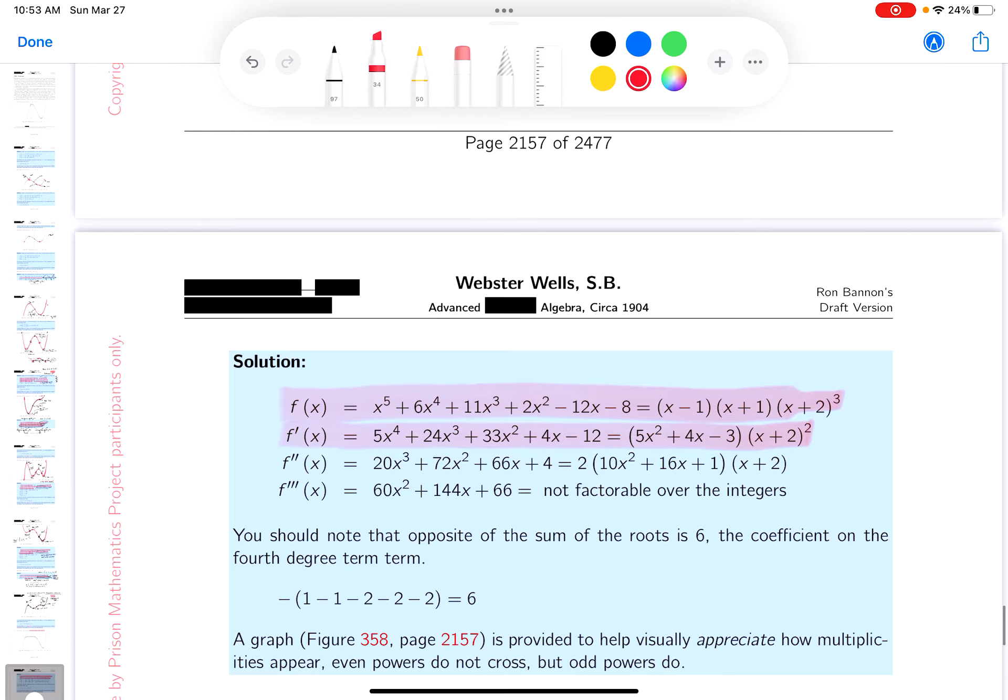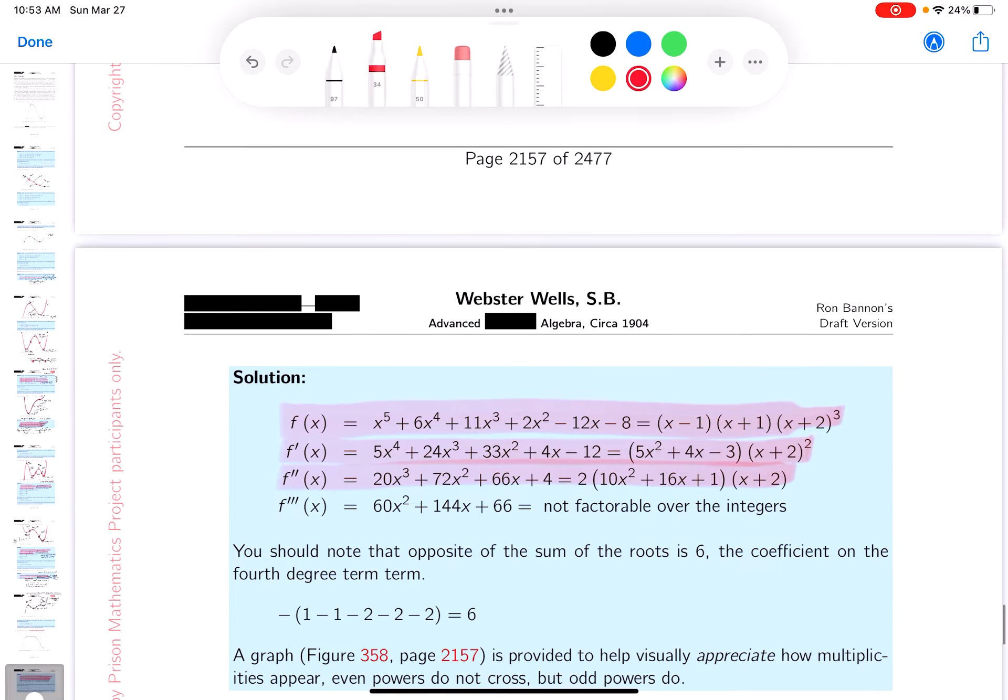Boy, that factored, I guess. Second derivative, let me see if I got that right: 20x^3 + 72x^2 + 66x + 4. Okay, before I do anything, what I want to claim over here is that it did take me work to get through that. There's no doubt about it. There's work that's involved in that.